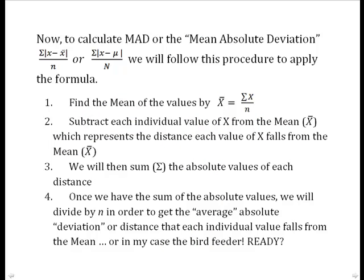So, to calculate MAD, or the mean absolute deviation, we're going to apply a formula that says take the distance each individual value falls from the average, add up the distances, add up the differences or the deviations, and then just give me the average of that.